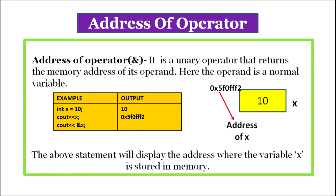Address of operator. This operator is indicated by the symbol ampersand (&). It is a unary operator that returns the memory address of its operand, where the operand is a normal variable. For example: int x equal to 10, where x is a variable and 10 is the value allocated to it. A 2-byte memory space will be allocated at a particular address and 10 will be stored there. When we say cout x, 10 will be displayed. But when we say cout ampersand x — ampersand means address of — so it will display the address of x, the address where memory is allocated to x. You can see in the output the memory address of x is displayed.